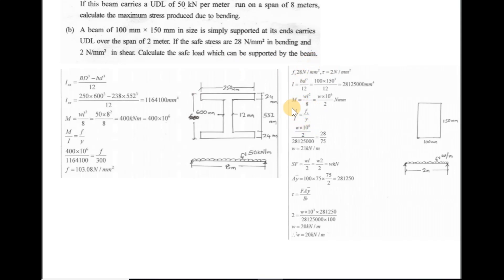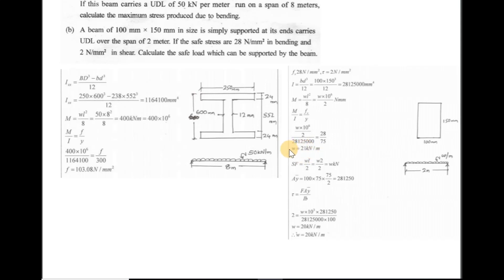Using the bending equation: M/I = σ/y, where M = wL²/8, σ = 28 N/mm², and y = D/2 = 75 mm, with I = BD³/12 for the rectangular section. Solving gives w = 21 kN/m from the bending consideration.